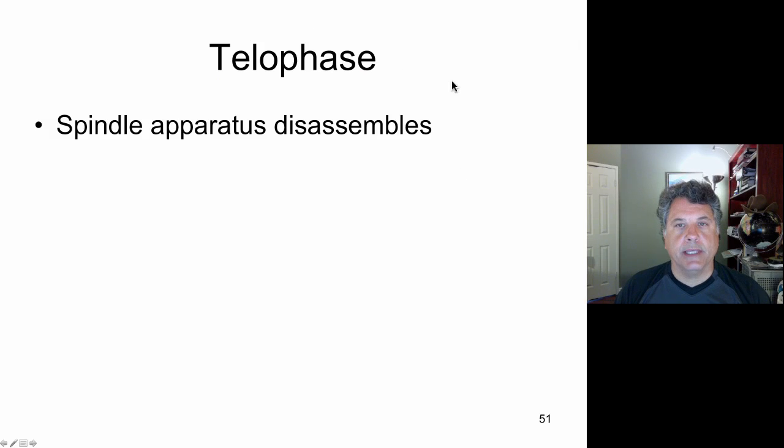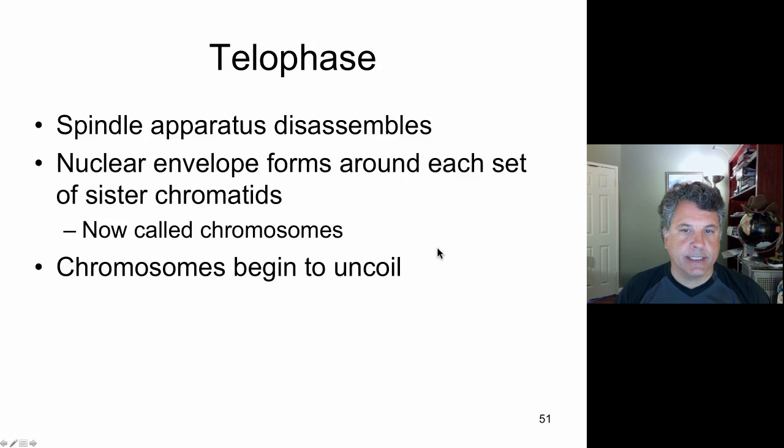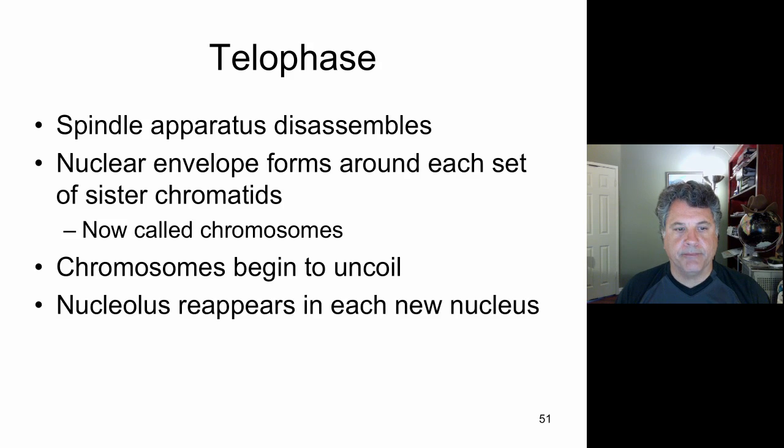Now telophase, we can now cover telophase. In telophase the spindle apparatus is disassembling. The nuclear envelope is forming around each set of chromosomes at the two poles of the cell now. They were sister chromatids but we now actually call them chromosomes. And the chromosomes begin to decondense. They are starting to achieve their interphase decondensed state where gene expression can occur. And the nucleolus reappears in each new nucleus, that is the center for the manufacture of ribosomal components occurs.